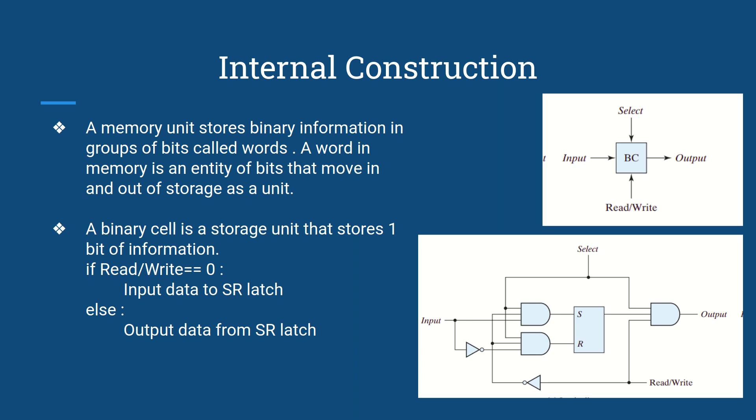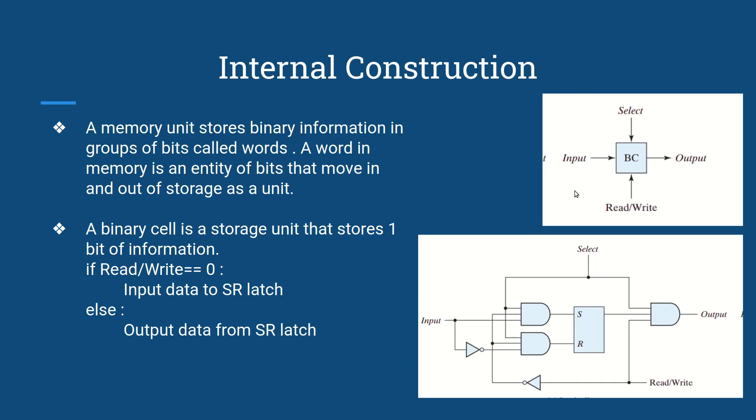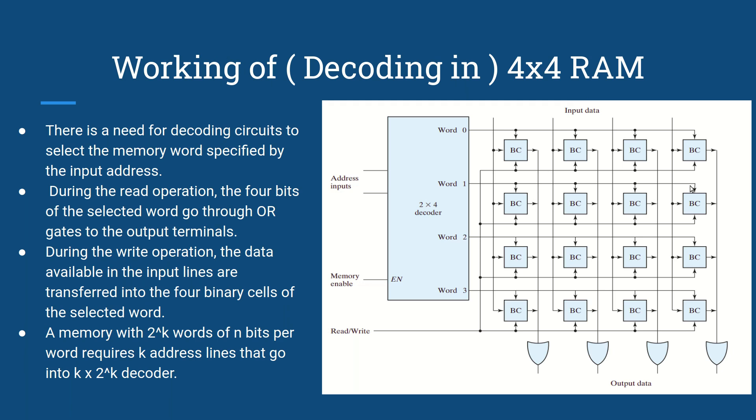That's all for the binary cell. Now, a word is a collection of binary cells. Each word has an address associated with it so we can locate it. The addresses of words are mapped to the address inputs. If there are k address inputs, they are mapped to 2^k words. So we can access 2^k words with k address inputs. After we have selected a specific word, let's take word 1, all the select lines in it will turn to 1, which means we are using this word and the binary cells associated with it.